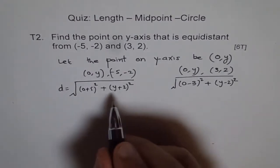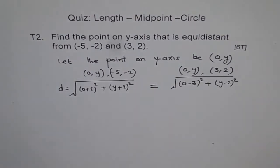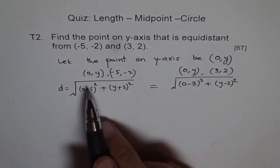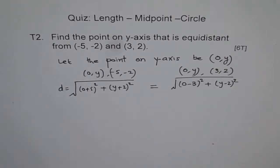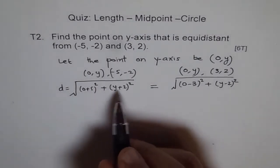And both the distances they say should be equal, right. So we'll equate them. Well, if the square roots are equal, that means if we square both sides then also they should be correct. So next we'll square both sides.